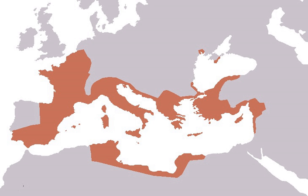Civil War 366 – Battle of Thyatira: the army of Roman Emperor Valens defeats the usurper Procopius. Civil War 388 – Battle of the Save: Emperor Theodosius I defeats the usurper Magnus Maximus. Civil War 394 – Battle of the Frigidus: Theodosius I defeats and kills the usurper Eugenius and his Frankish Magister Militum Arbogast.